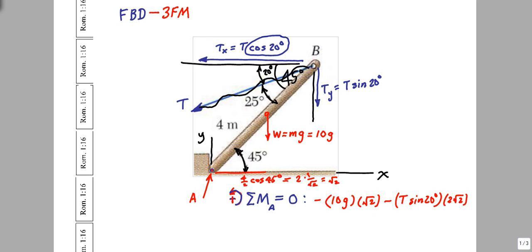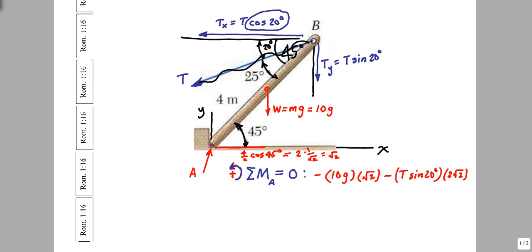And then the last one is going to be the X component. And so that is going to spin it about A in a counterclockwise fashion, which is the assumed positive direction. So we get T cos of 20 degrees times 2 radical 2, and all of this must be equal to 0.